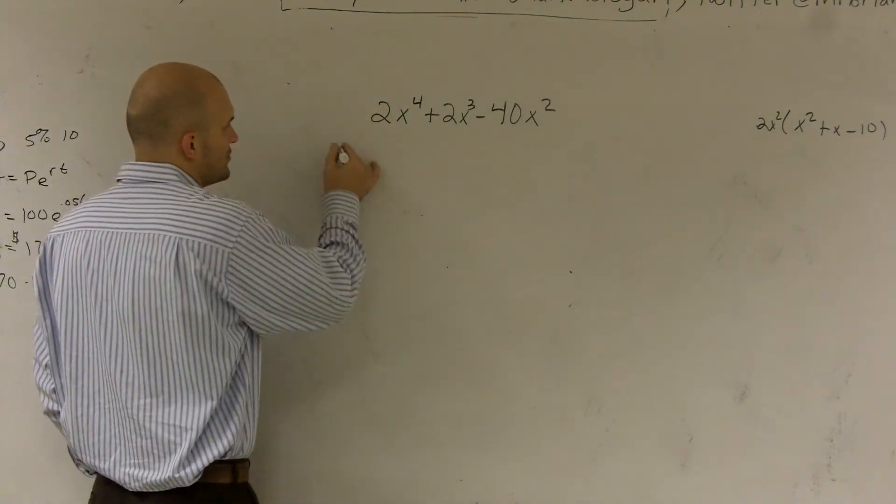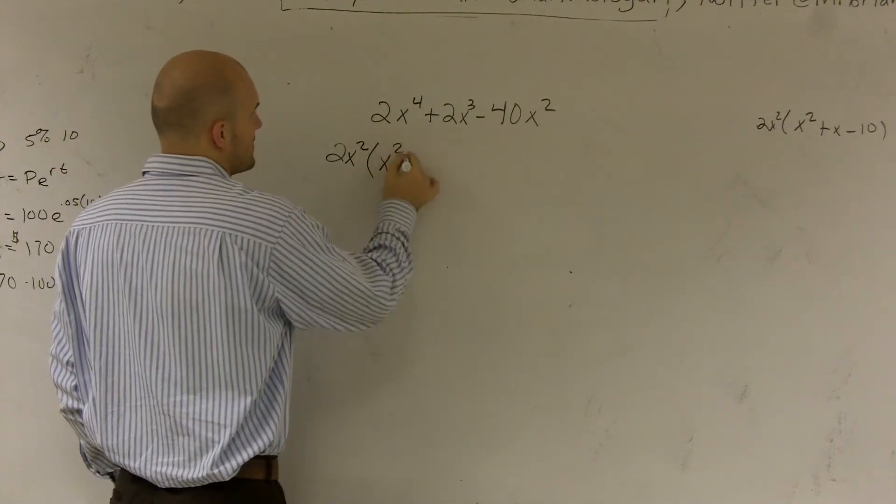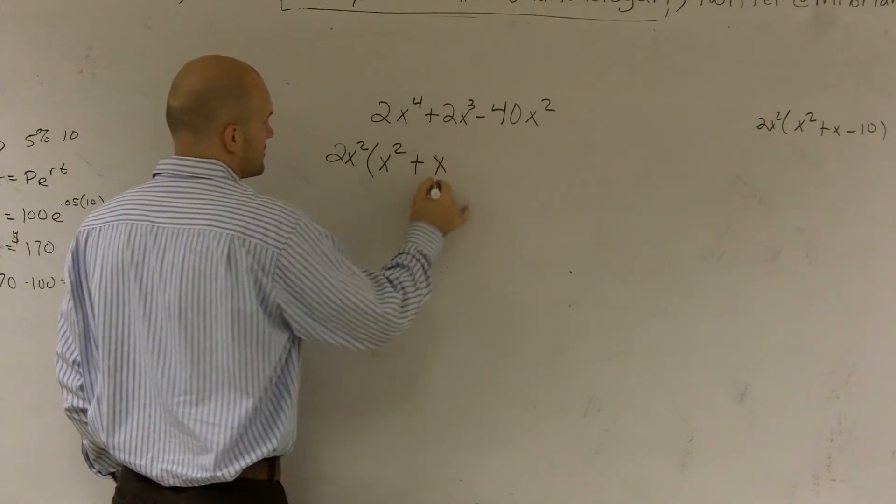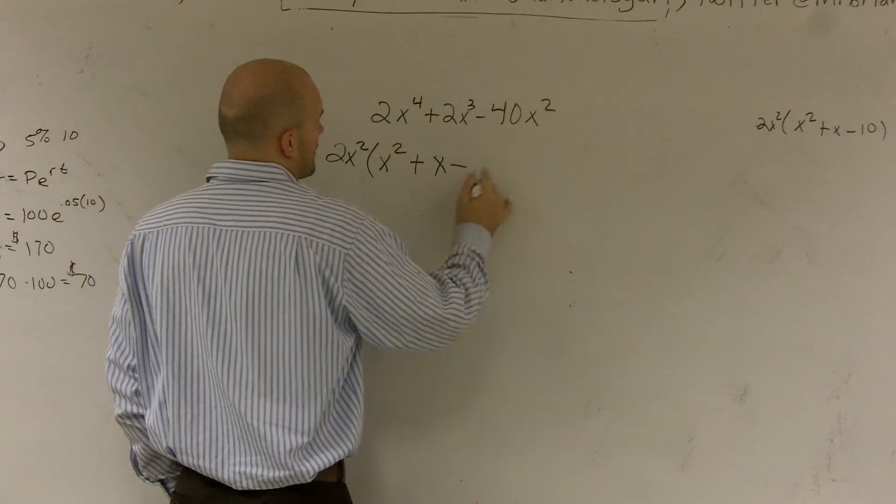So if I pull out a 2x squared, I'm left with x squared plus x minus 20.